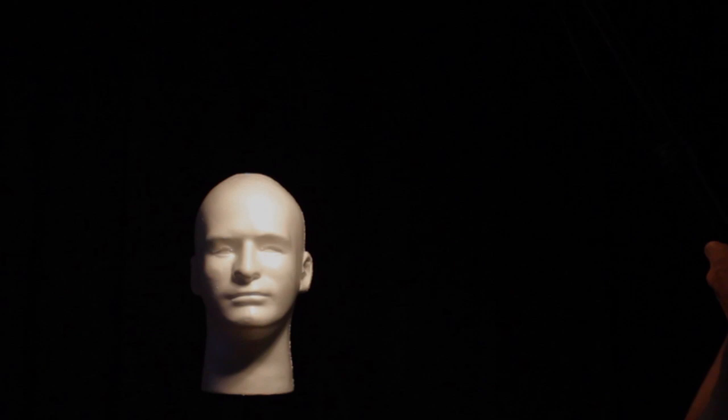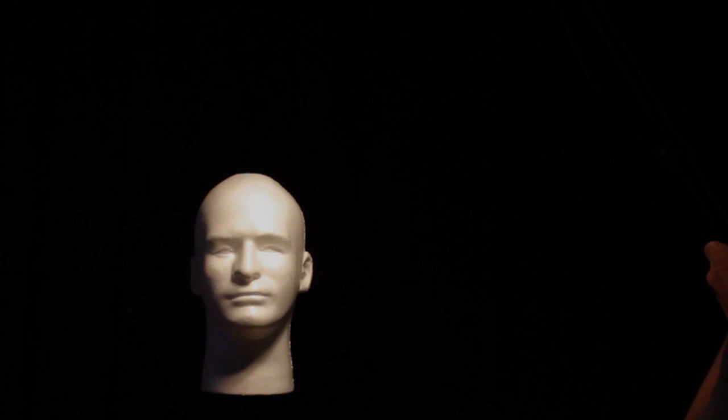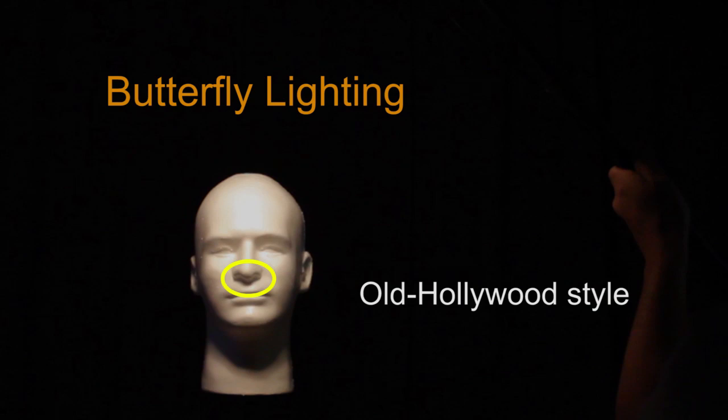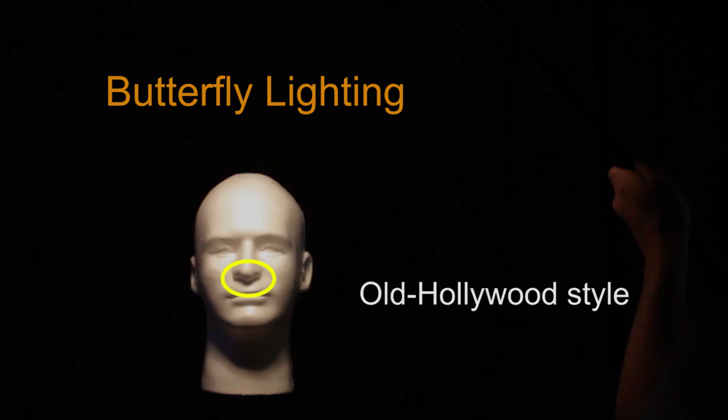Now we'll move the light just in front and above the subject's head to get the butterfly lighting pattern. It's an old Hollywood look with a butterfly-shaped shadow under the nose. Depending on how you tweak it, this light is great for hiding certain flaws as well as accentuating things like cheekbones and the chin. The neck gets this large shadow cast on it, making the front of the face the main focus.